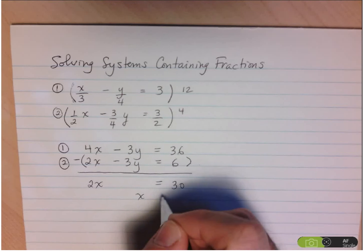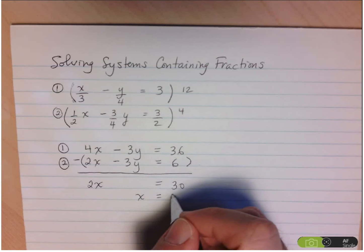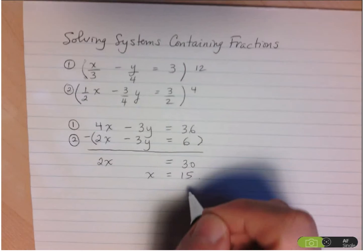And so now we can easily solve for x. 30 divided by 2 is 15.